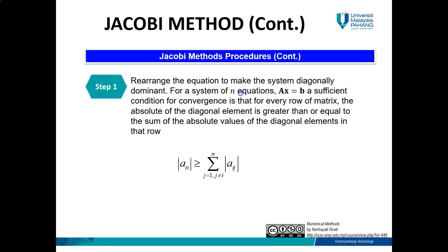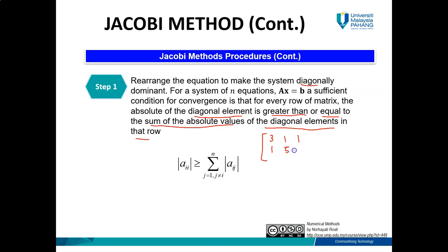For step number one, you need to rearrange the system such that it is diagonally dominant. For a system of N equations AX = B, a sufficient condition for convergence is that for every row, the absolute value of the diagonal element should be greater than or equal to the sum of the absolute values of the off-diagonal elements in that row. You need to check that the absolute value of A_ii is greater than the sum of the other values in the same row. For example, consider the matrix with rows [3, 1, 1], [1, 5, 2], [2, 3, 7].